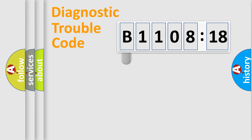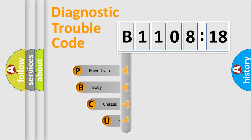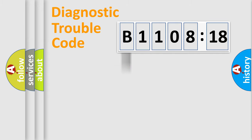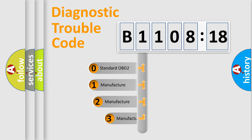First, let's look at the history of diagnostic fault code composition according to the OBD2 protocol, which is unified for all automakers since 2000. We divide the electric system of the automobile into four basic units: Powertrain, Body, Chassis, and Network. This distribution is defined in the first character of the code.